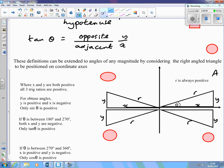Looking now at obtuse angles, that's angles between 90 degrees and 180 degrees, so measuring round from the positive x-axis.